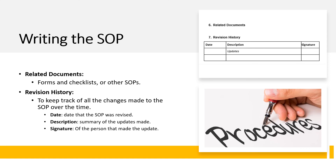Revision history — this section is where you keep track of all the changes made to the SOP over time, and it will help to remember why the document was updated and when. Date — enter the date that the SOP was revised. Description — briefly summarize the updates made. Signature — the person that made the update will need to sign in this field.